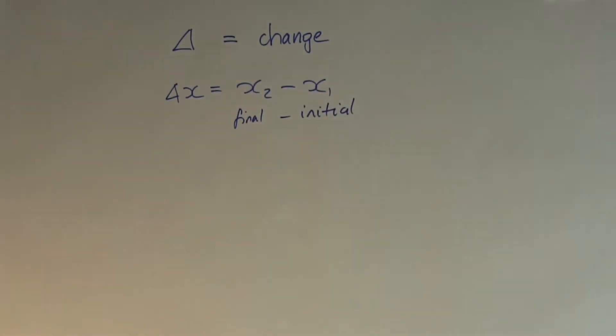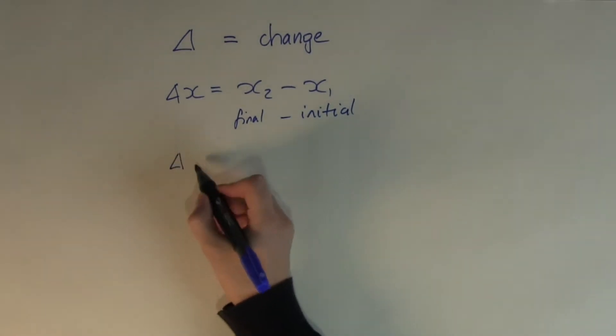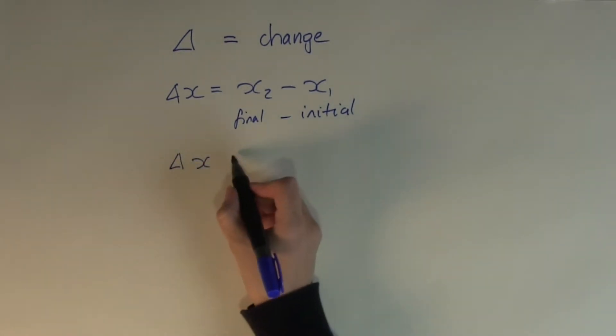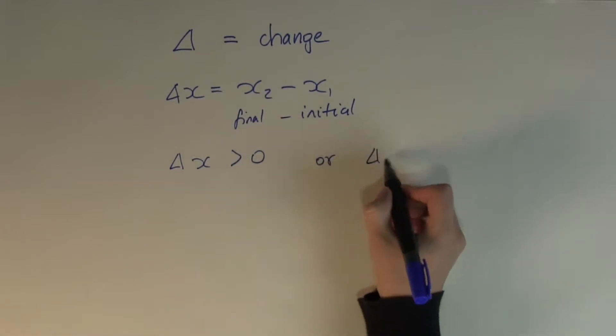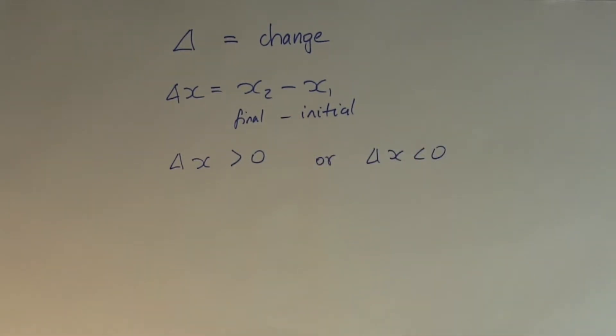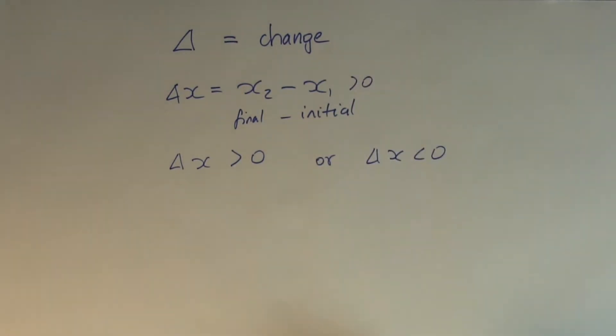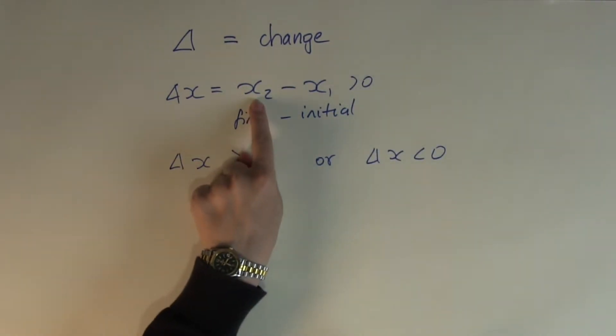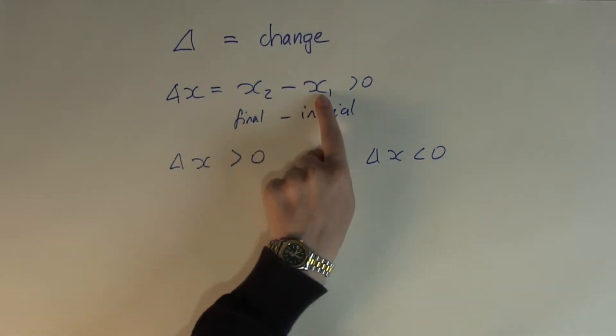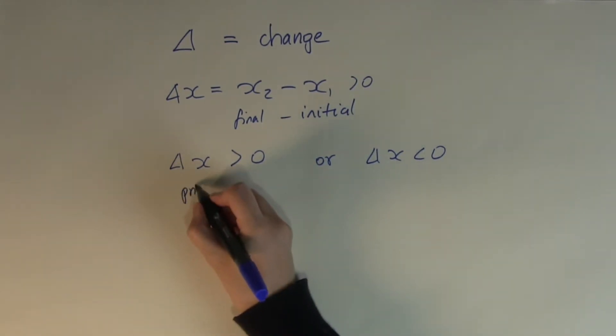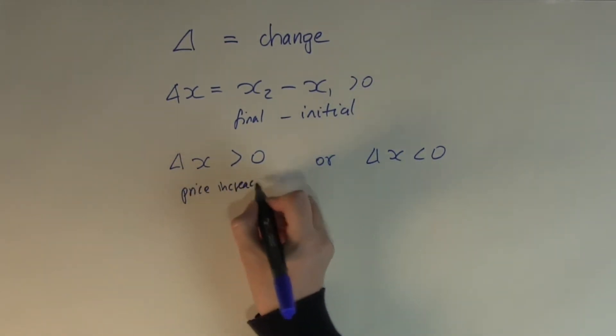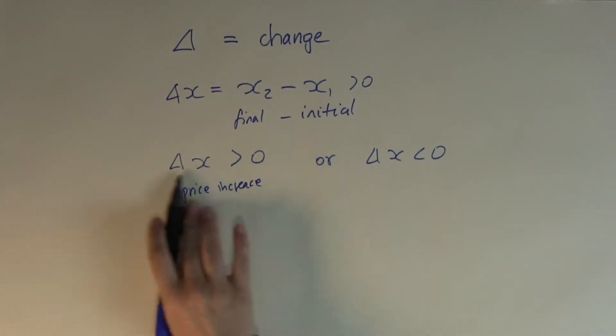So far nothing too complicated. But in some calculations you may have come across with change being positive or the change being negative. Well, if the change is positive, that means that delta x2 minus x1 is positive. So the final price is bigger than the initial price. Positive change means there has been a price increase, if we're talking about price, or some kind of quantity increase.